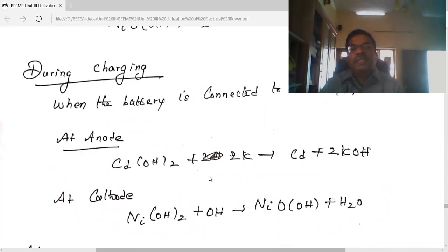During discharging, at anode: Cd(OH)2 plus 2 electrons gives Cd plus 2KOH. At cathode: NiO(OH) gives Ni(OH)2 plus OH.